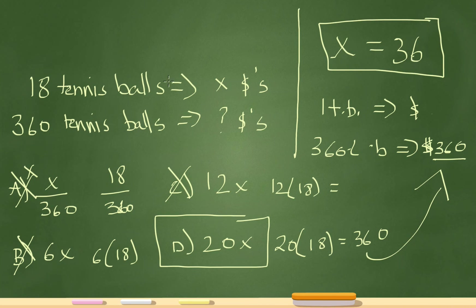Now if X is 36, then I'm saying 18 tennis balls cost $36. So if 18 tennis balls cost $36, then I know that one tennis ball must cost me $2.